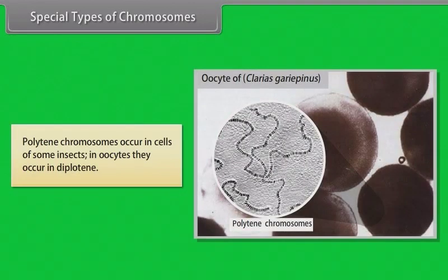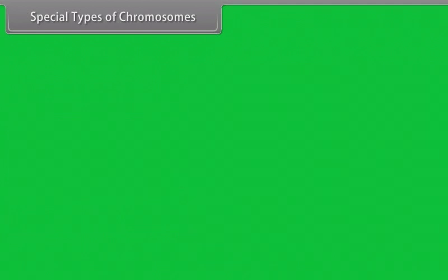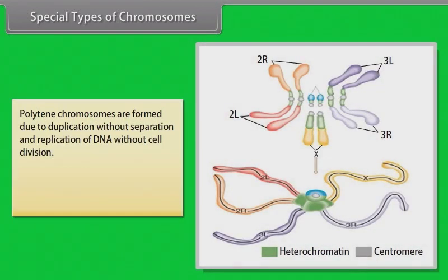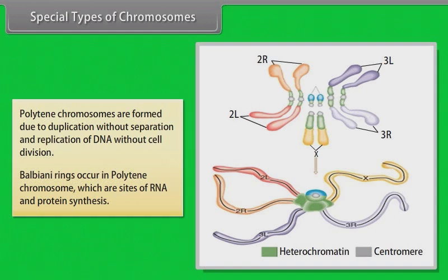Lampbrush chromosomes are observed in meiotic prophase. Polytene chromosomes occur in cells of some insects; in oocytes they occur in diplotene. Polytene chromosomes are formed due to duplication without separation and replication of DNA without cell division. Balbiani rings occur in polytene chromosomes, which are sites of RNA and protein synthesis.